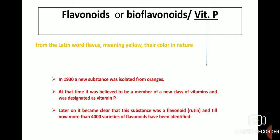Flavonoids, or bioflavonoids, are also called vitamin B. In 1930, a new substance was isolated from oranges. At the time it was believed to be a member of a new class of vitamins and was designated as vitamin B. Later on, it became clear that this substance was a flavonoid — that is, rutin — and till now more than 4000 varieties of flavonoids have been identified. The word 'flavonoid' is derived from the Latin word for flower, meaning yellow, because of their yellow color in nature.